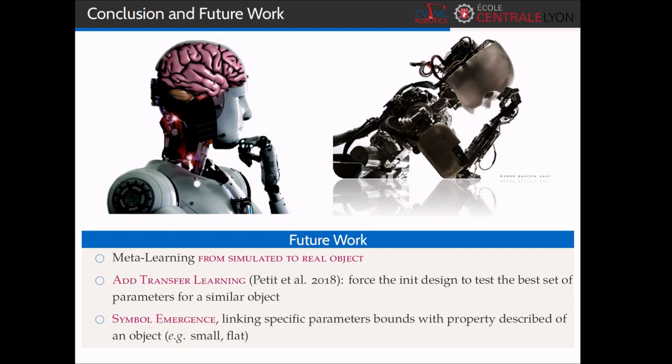Eventually, we are also interested to link this work with the symbol emergence domain. With the hypothesis, some specific ranges of parameters are linked to physical properties of the object. For instance, grasping a small object always leads to an optimization with parameter P9 between 0.7 and 1. It can then be used in two ways. If optimization of the robot for a new object leads to such case, the robot can discover that this object can actually be defined as small. On the opposite, if the robot has to optimize an object described as small by the human, the robot can automatically reduce the search space based on that description.